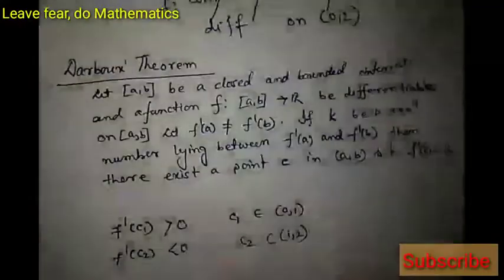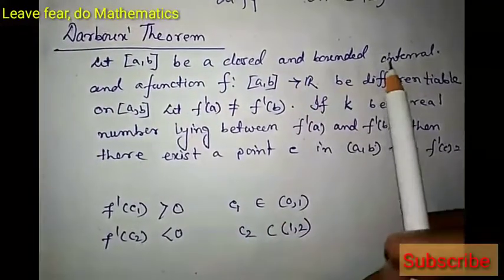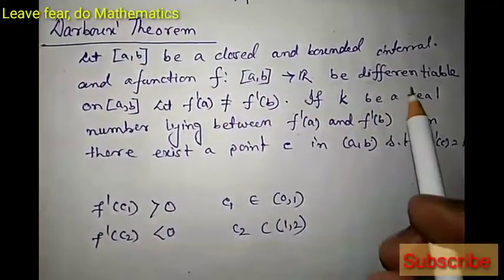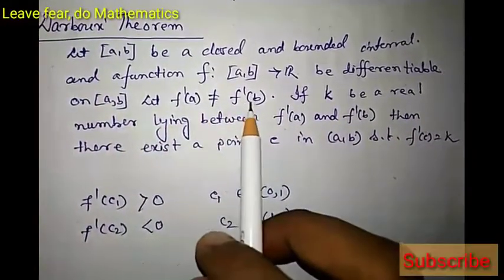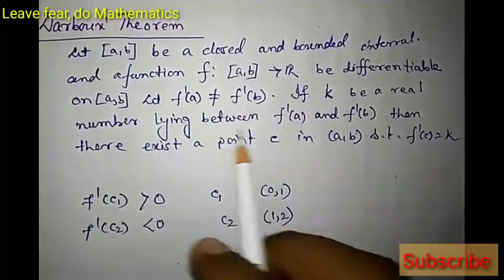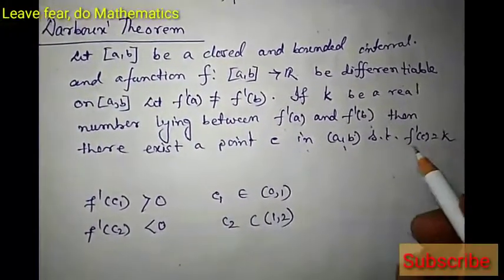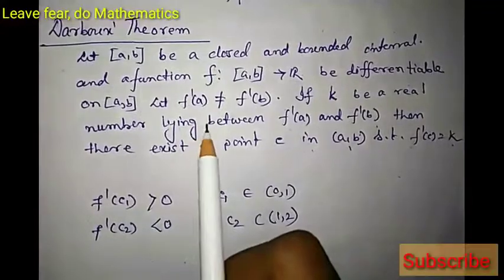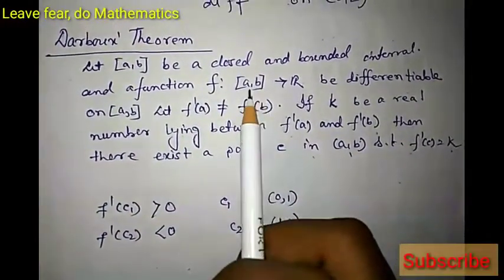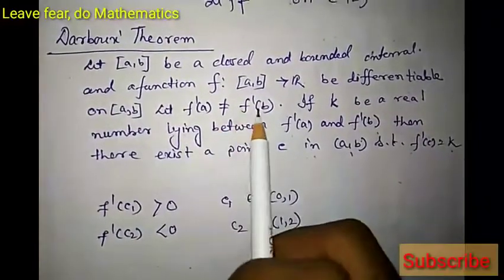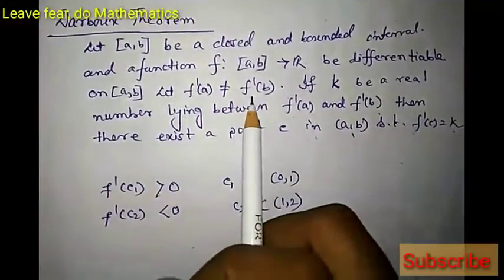To prove the next part, we need Darboux's theorem. Let [a,b] be a closed bounded interval and f from [a,b] to R be differentiable on [a,b]. Let f'(a) ≠ f'(b). If k is a real number lying between f'(a) and f'(b), then there exists at least one point c in open interval (a,b) such that f'(c) = k. Essentially, the derived function takes every value between f'(a) and f'(b).